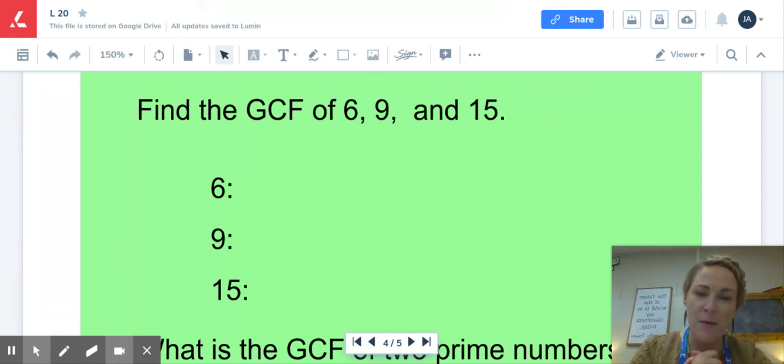Just for time's sake, so I'm not using up a bunch of your data at home, I'm not going to go through this as an example, but you can see doing three numbers is really no different than finding the GCF of two. You're just adding one more number. There's no shortcut. Just take the time to do the work. Find the factors of that number and then identify what is the greatest of those three.